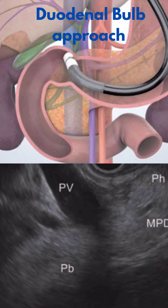Coming back to the approach: my transducer in the duodenal bulb is facing posteriorly and leftwards. In this position, the main portal vein will be in the field of the tip beam. That's why you should search for it on the left side of your screen.